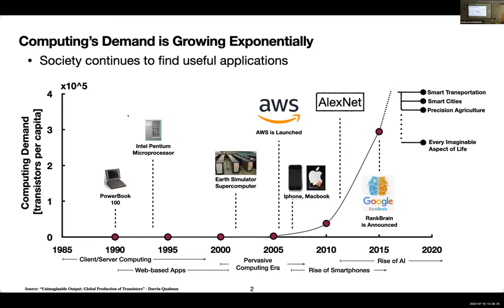In my opinion, two things have contributed to this demand. First is the availability of personal computers and mobile devices, along with cloud platforms such as AWS, GCP, and Azure, that allowed everyone to build applications for personal devices. Combined with the recent explosive growth in ML model usage and their sizes, that demand is going to accelerate even further — we are only beginning to apply these tools to different aspects of life, ranging from smart transportation to precision agriculture, smart cities, and more.